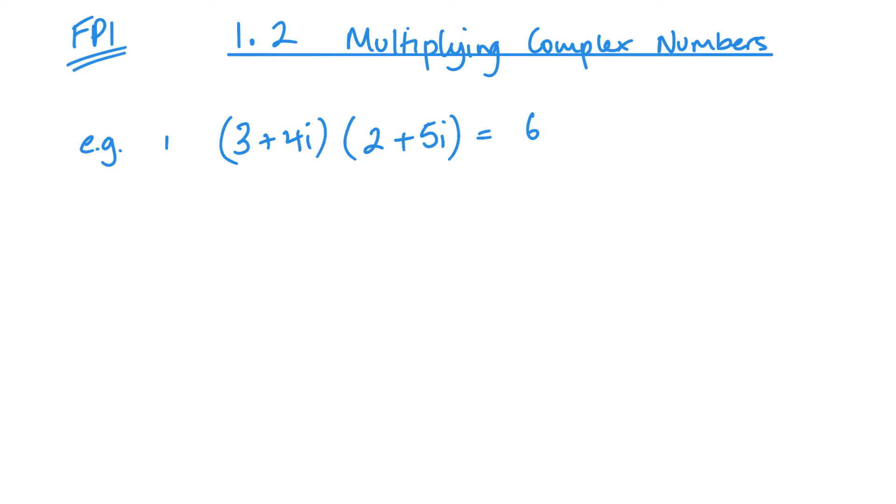3 times 5i is 15i, 4i times 2 is 8i, and 4i times 5i is 20i squared.